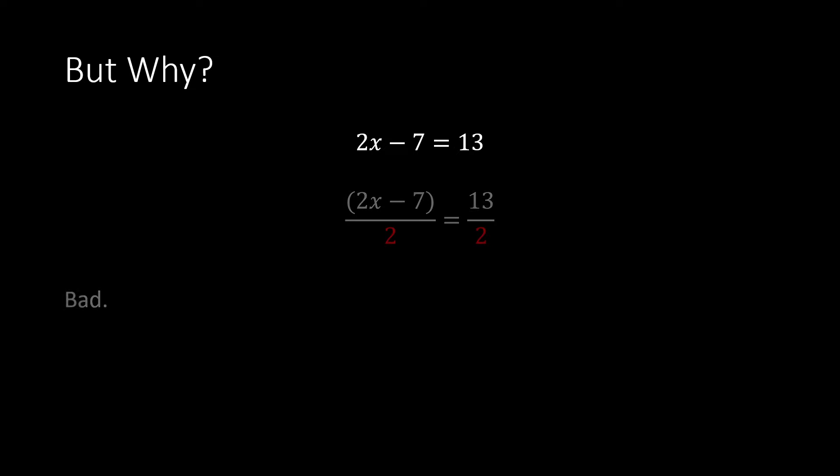But why get rid of the minus 7 first instead of dividing by 2 first? If you divide by 2 first, when you do something to a side you have to do it to the entire side — so you're not just dividing the 2x by 2, you're also dividing the minus 7 by 2, which creates fractions. It could still work, but fractions are annoying, so it's easier to remove the constant term first.